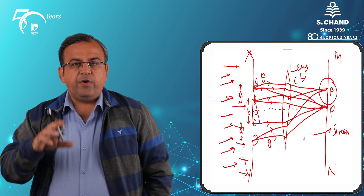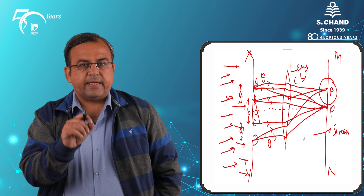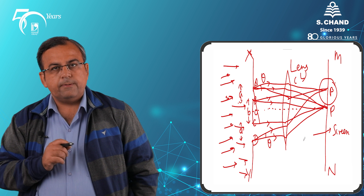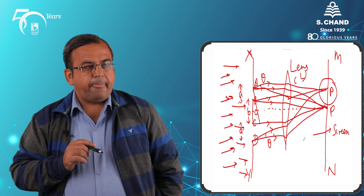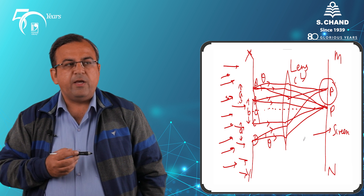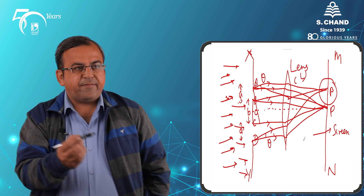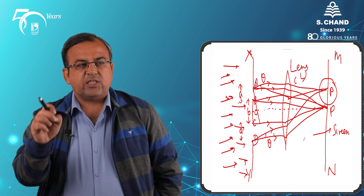Before going to the break, we talked about the pattern which we are observing from the two slits — it will be similar to what we normally observe for the single slit as well. We had considered two slits, light is incident onto them, we had a collecting lens, and then we had a screen. We drew a perpendicular OP and considered that light which is parallel to OP will give maxima at point P on screen MN.